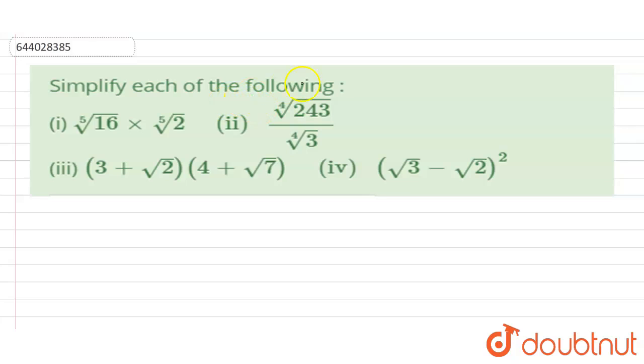Hello students, in this problem we are required to simplify each of the following. The first problem is fifth root of 16 and the fifth root of root 2. Then the second problem, the third problem is 3 plus root 2 multiplied by 4 plus root 7, and last one is root 3 minus root 2 the whole square. So let's proceed.